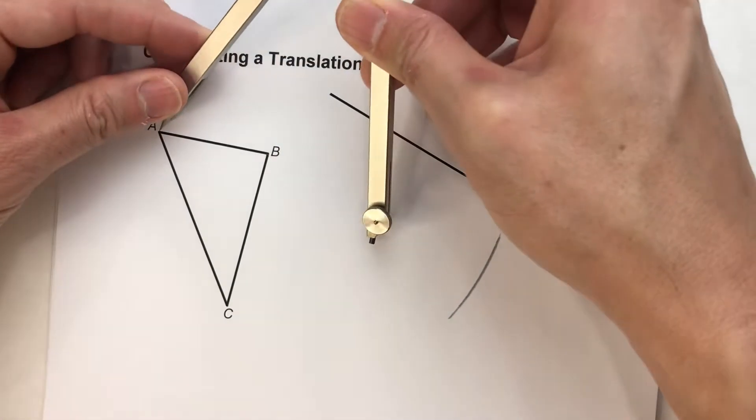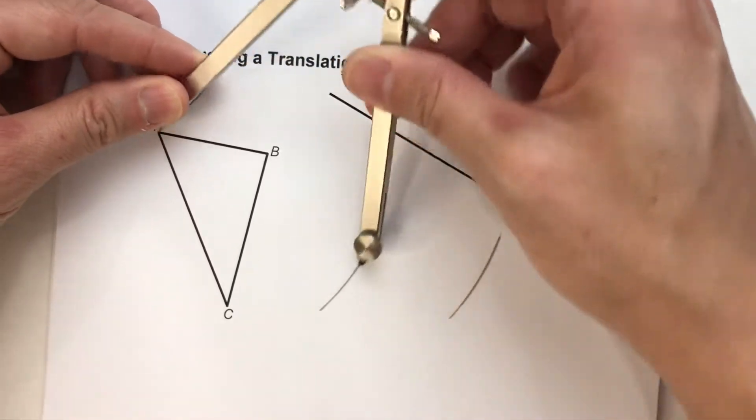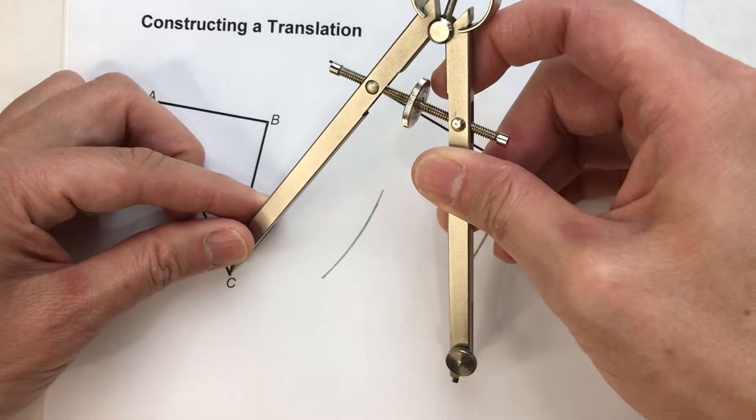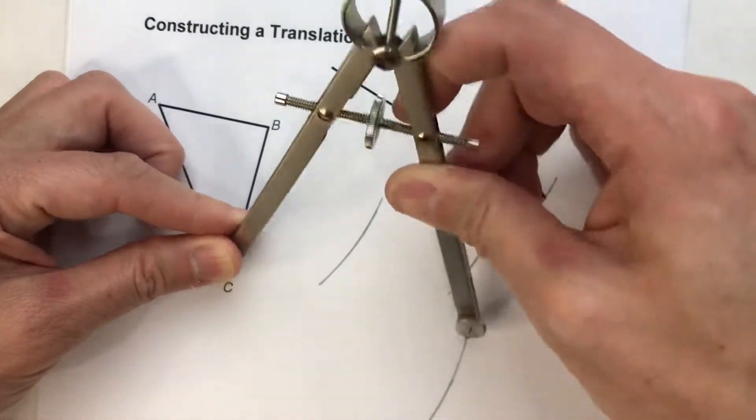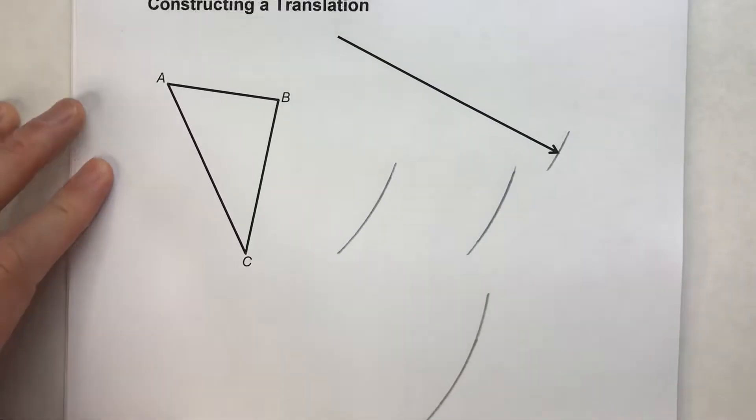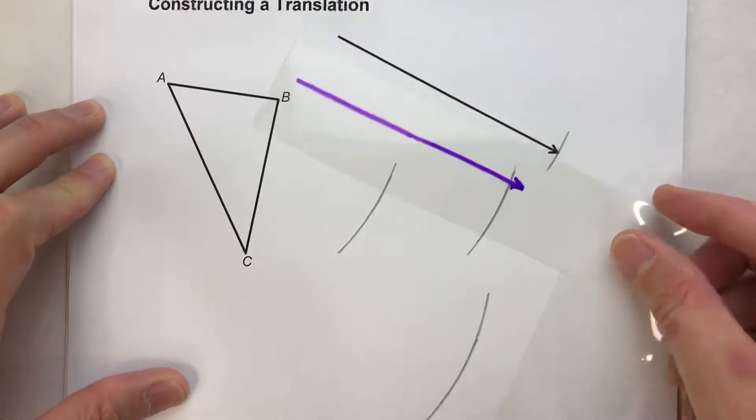Same with A. A prime is going to end up somewhere along that arc. And then here's C. So C prime is going to end up somewhere along that arc. So again, we need to slide each point there.